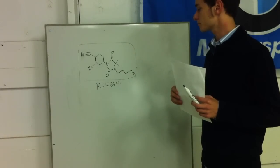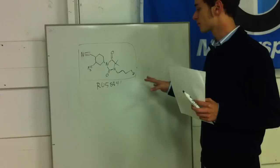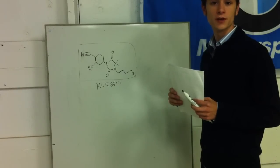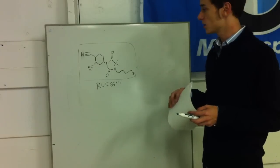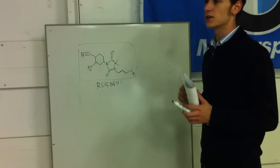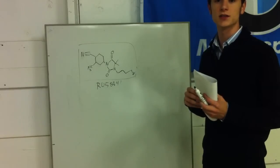So RU58841, or RUM, is a prodrug for RU58841. And what that means is a prodrug is a form of a drug that doesn't become active until it reaches its desired location.